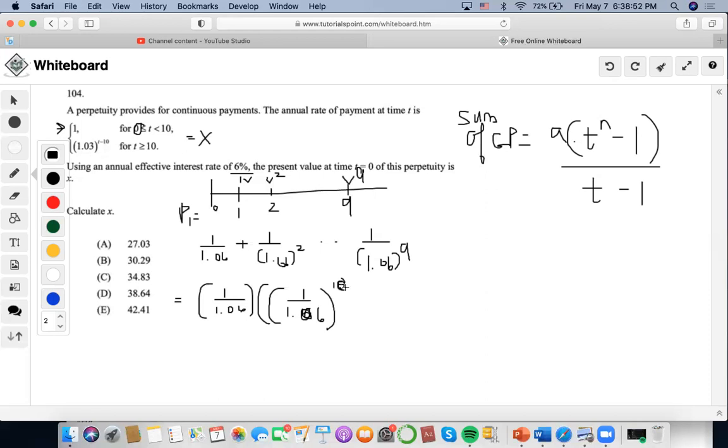The first term is 1 over 1.06. The common ratio is clearly 1 over 1.06. Including 0, there are a total of 10 terms. This time period minus 1 is the numerator part, over a common ratio again of 1 over 1.06 minus 1.